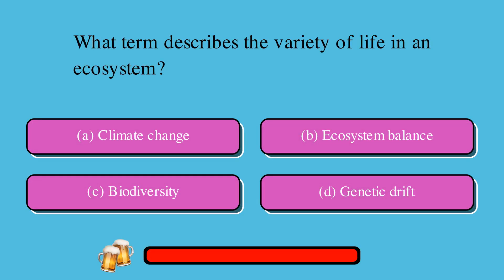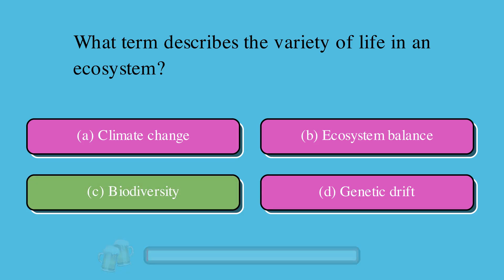What term describes the variety of life in an ecosystem? A. Climate change, B. Ecosystem balance, C. Biodiversity, or D. Genetic drift? The correct answer is C. Biodiversity.